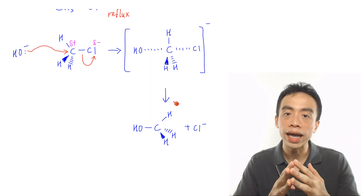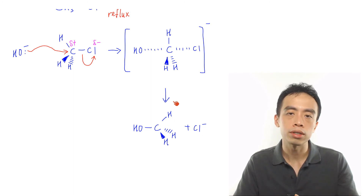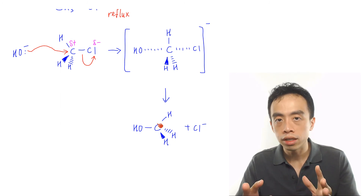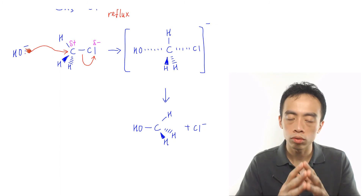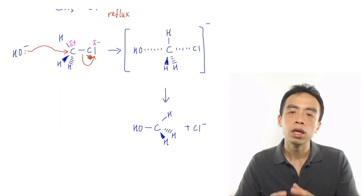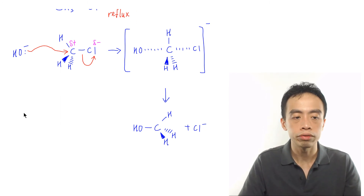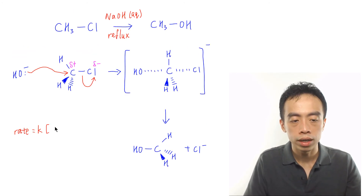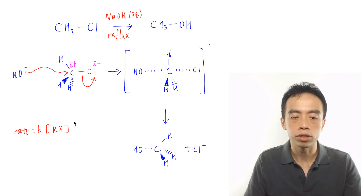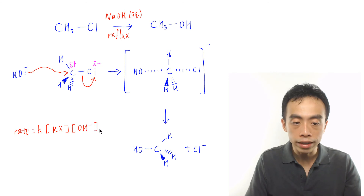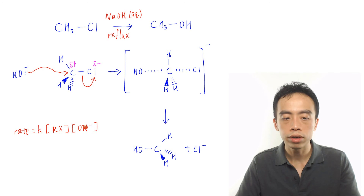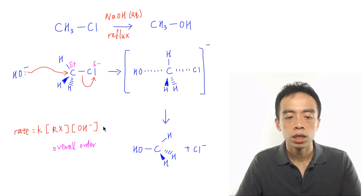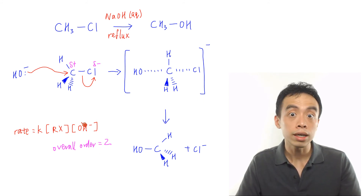The number '2' in SN2 represents the overall order of the reaction. Since there is only one step, it is the rate-determining step. Inside this step, there is one OH⁻ (first order with respect to OH⁻) and one haloalkane (first order with respect to haloalkane). Therefore: rate = k[haloalkane]¹[OH⁻]¹. The overall order equals 2, which is why this is called SN2 mechanism.